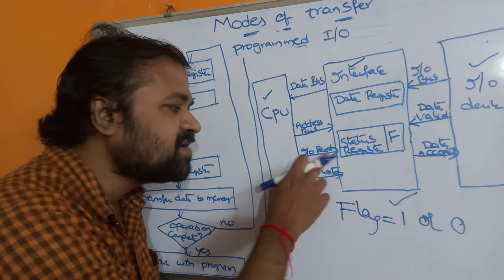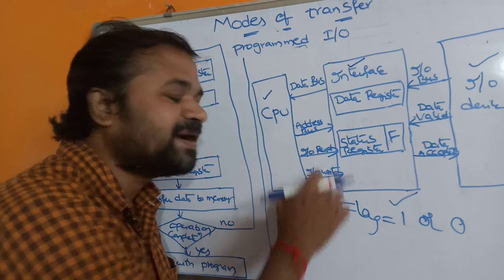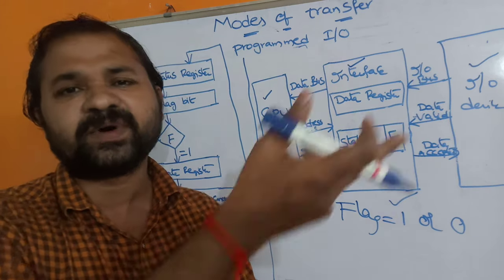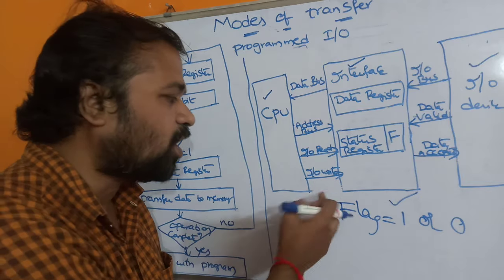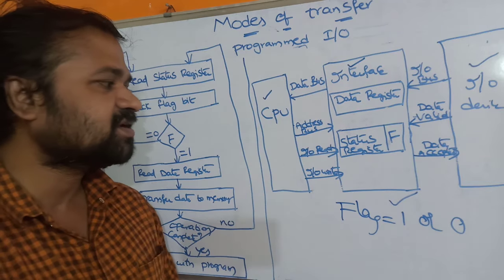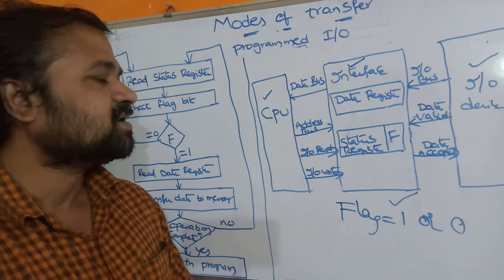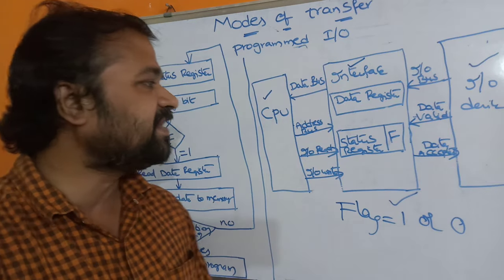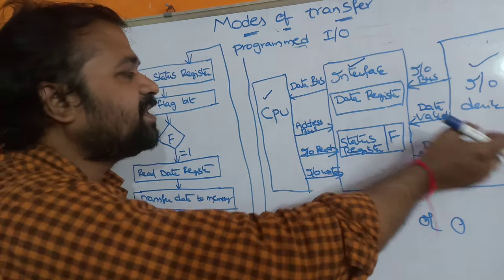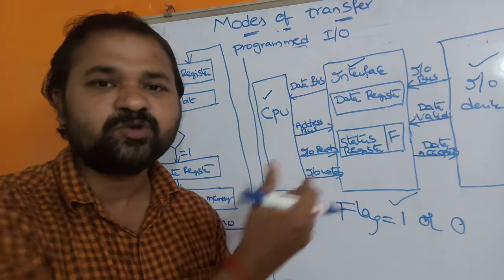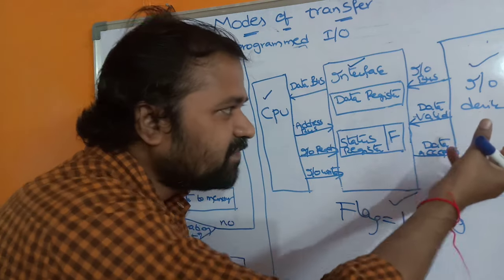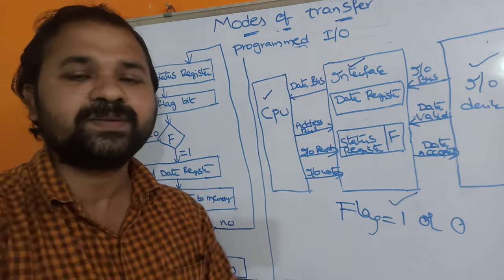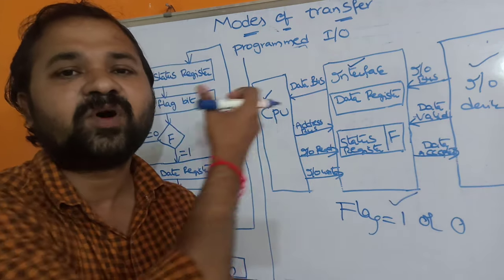IO read and IO write are nothing but control lines. We can mainly perform two operations: read operation or write operation. In this way, data will be transferred between IO devices and CPU — meaning data will be transferred from IO devices to memory with the help of the CPU.